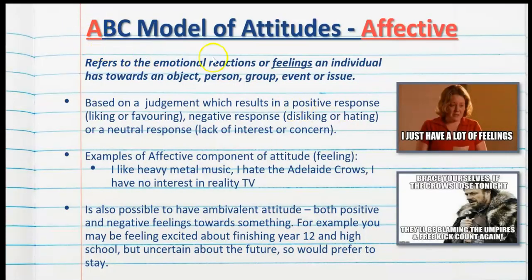Looking first at the A of the model, which is affective — this refers to the emotional reactions or feelings an individual has towards an object, person, group, event or issue. It's based on a judgement which results in a positive response, such as liking or favouring something; a negative response, such as disliking or hating something; or a neutral response — a lack of interest or concern. Examples of affective components would be: I like heavy metal music; I hate the Adelaide Crows; I have no interest in reality TV.